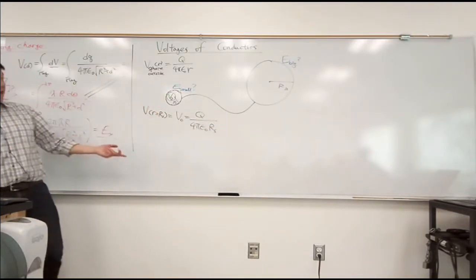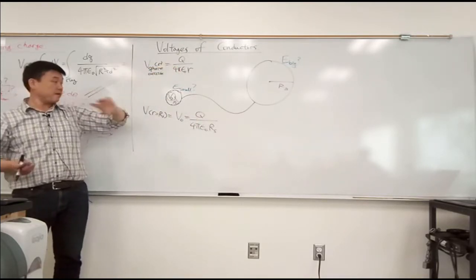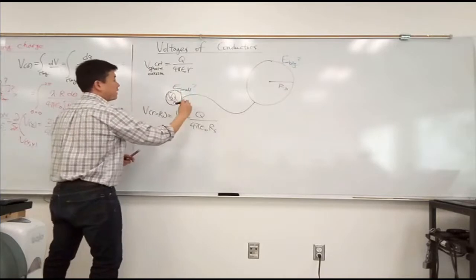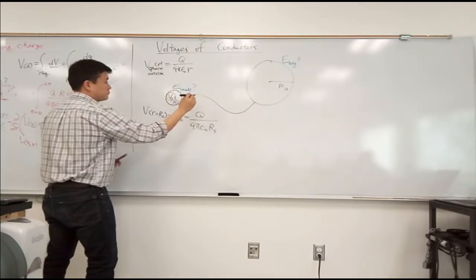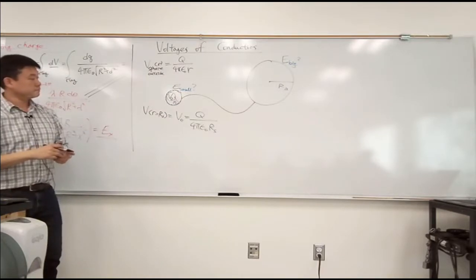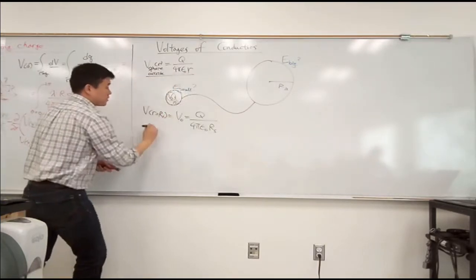But that should also be consistent with this expression here. So that's equal to q over 4 pi epsilon naught rs. So you can imagine solving this for q, and then plug it in here. And when you do all that, you're going to get for the... So I'm sorry, I'm confusing myself. So I have these two expressions, right?